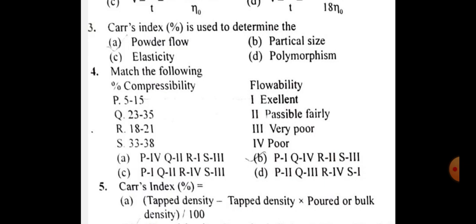If it is 23 to 35%, it is poor flow. 18 to 21% is passable fairly. And if the percentage compressibility is 33 to 38%, it is very poor flow.